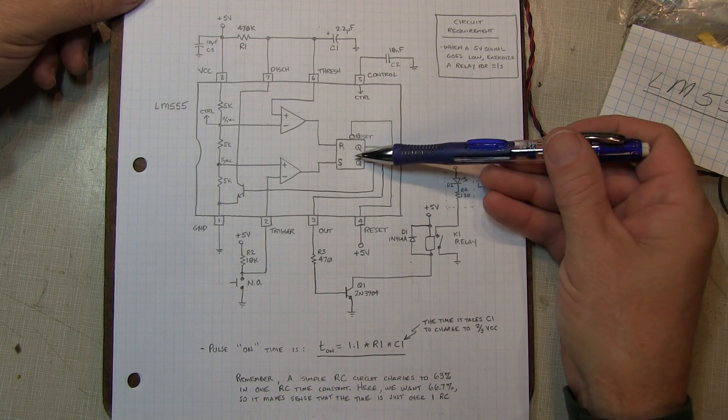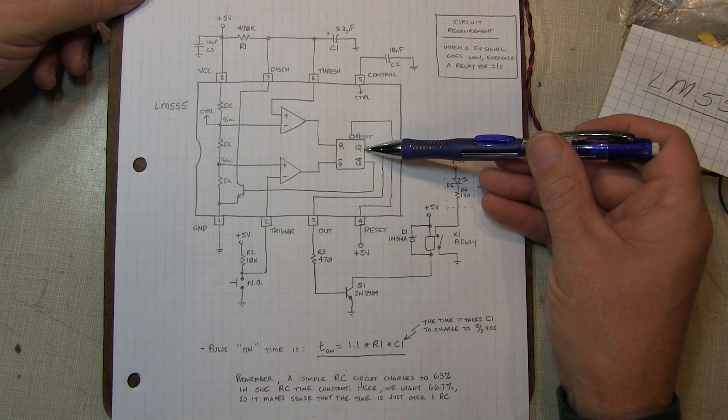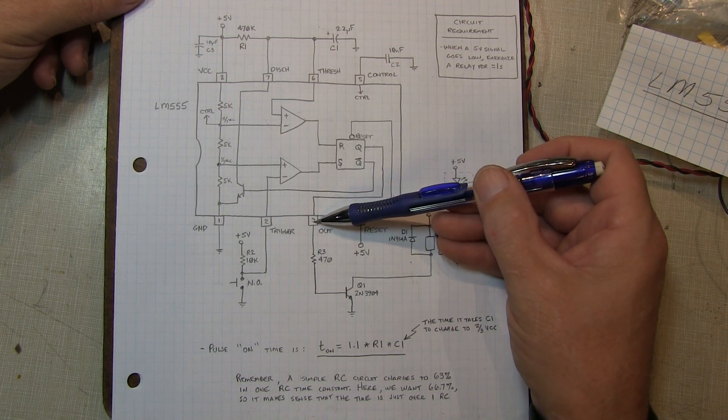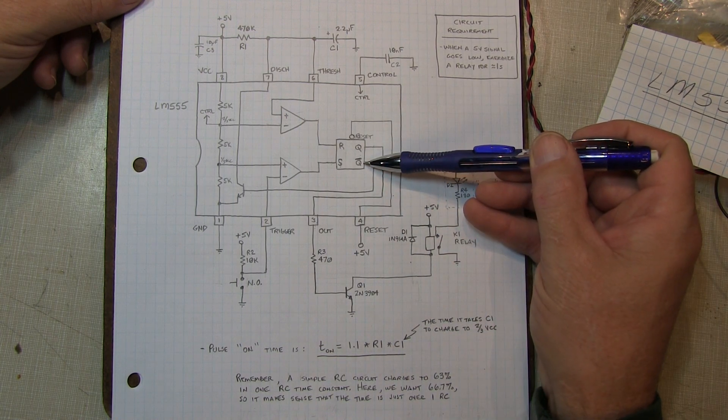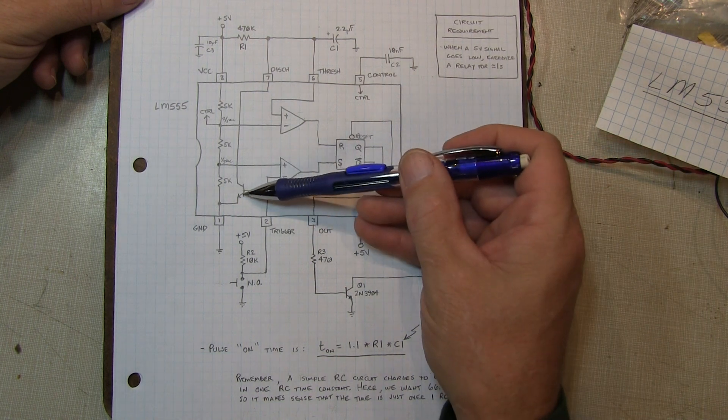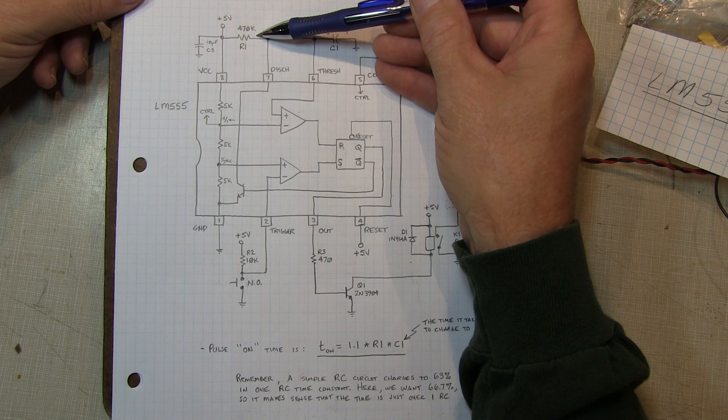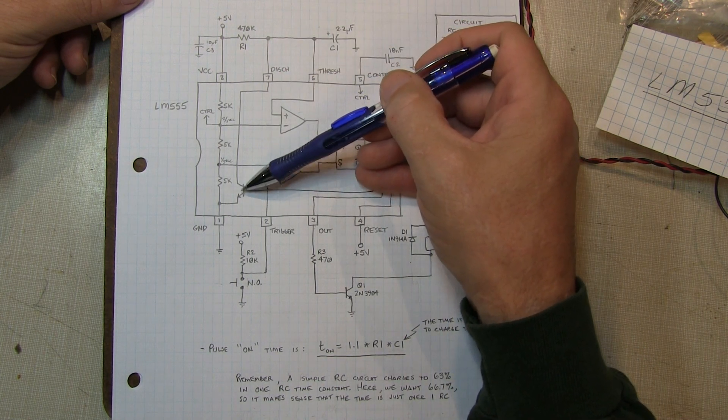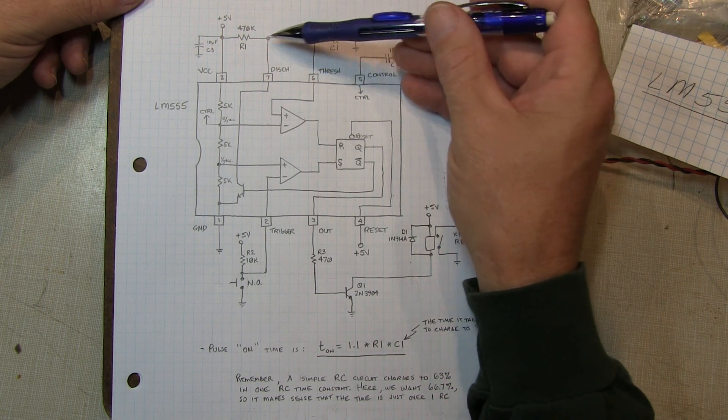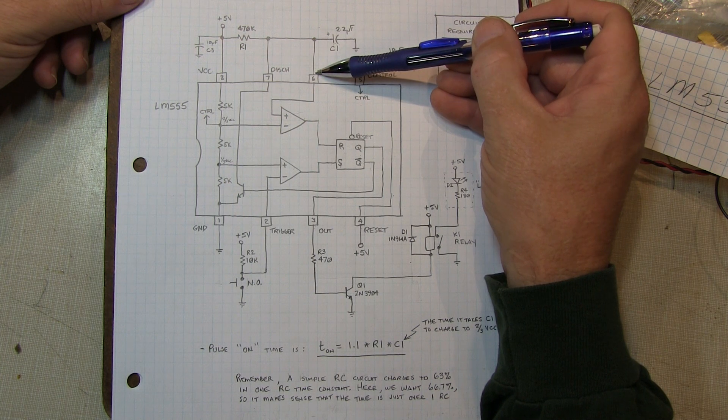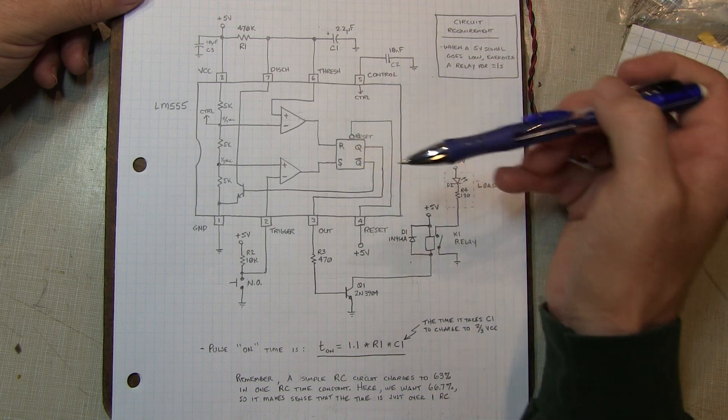Upon power-up, the RS flip-flop is in the reset condition. So that means that the Q output is low, which means that this out is low, the transistor is off, our load is not energized. And the Q bar output of the flip-flop is high, which means that this transistor is turned on, which means it's pulling current down through this resistor here and saturating the transistor and keeping the capacitor here from charging up.